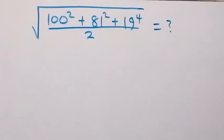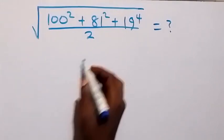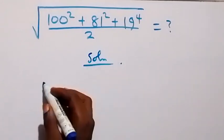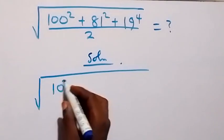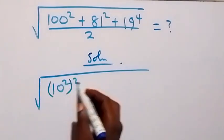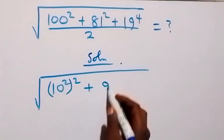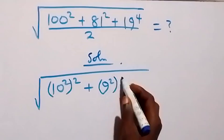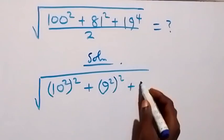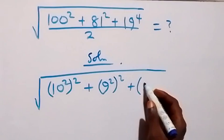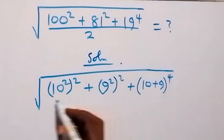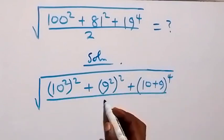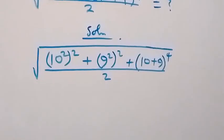Hello y'all, welcome. How to solve this 9 square root multiple algebra problem. From here we can write this as square root of — here 100 can be written as 10 squared, then we also have a square here, then plus 1 — write it as 9 squared, then we also have this square here. Then plus here, 19 we can write it as 10 plus 9, then all raised to power 4, which is being divided by 2.